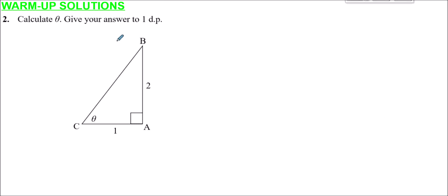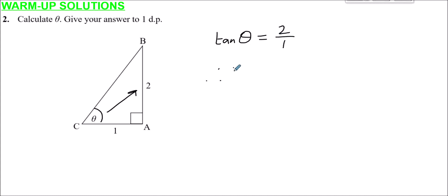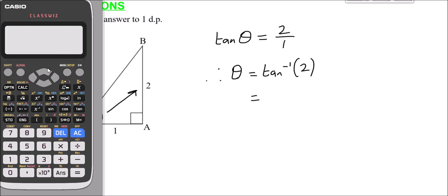Question 2: calculate theta, giving your answer to one decimal place. This is GCSE trig in its simplest form. We know the opposite side is 2 and the adjacent is 1. This will be applied later when working out the angle between a vector and the x or y axes. We know that tan theta is the opposite over the adjacent, so that's 2 over 1, which is 2. Therefore theta is tan minus 1 of 2, which gives 63.4 degrees to one decimal place.